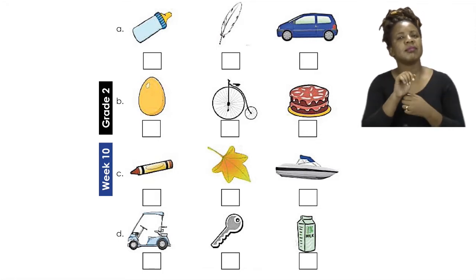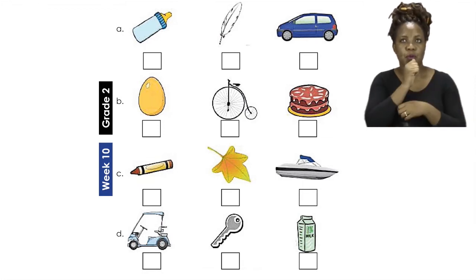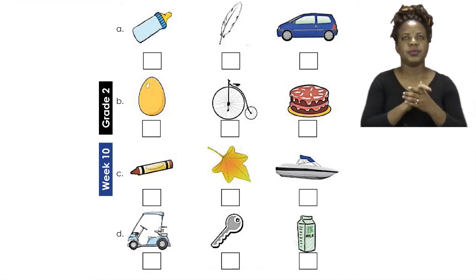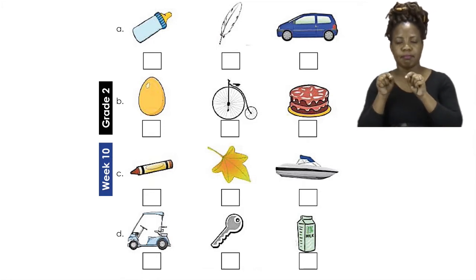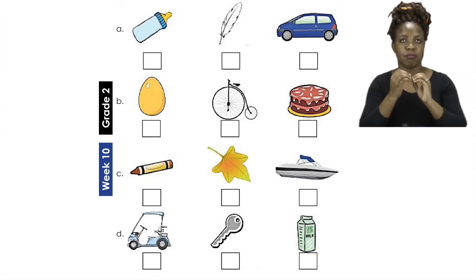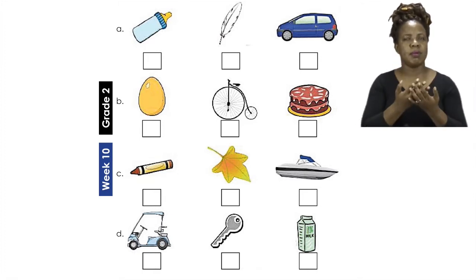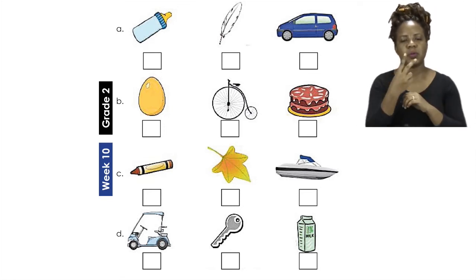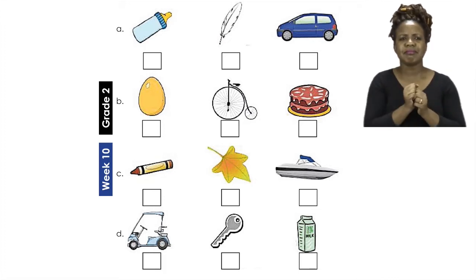As you can see, A has a baby bottle, a feather and a car. The boxes below are the ones that we're going to use to put our numbers. Number one is going to be the heaviest one and then the last one will be number three. So which one do you think is the heaviest — the car, the feather, or the baby bottle?